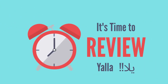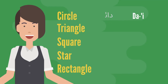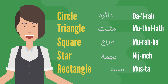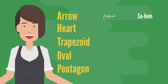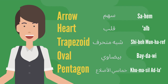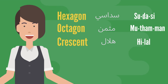Now it's time to review. Let's start with the 2D words: circle, triangle, square, star, rectangle, arrow, heart, trapezoid — شبه منحرف, oval — بيضاوي, pentagon — خماسي الأضلاع, hexagon — سداسي, octagon — مثمن, crescent — هلال.